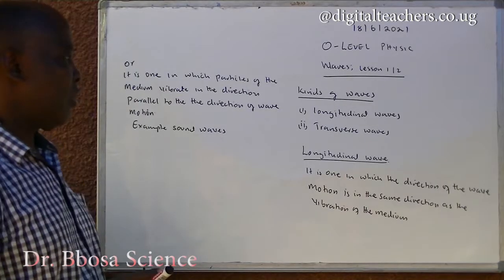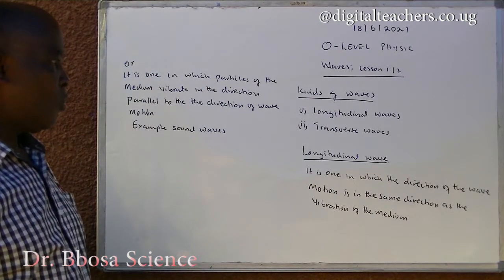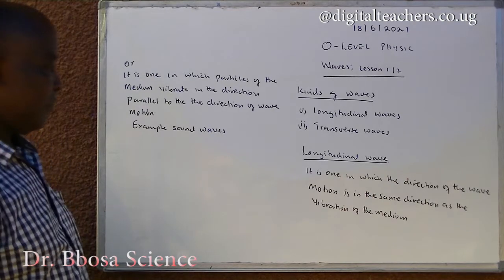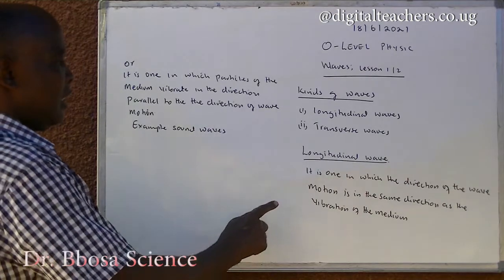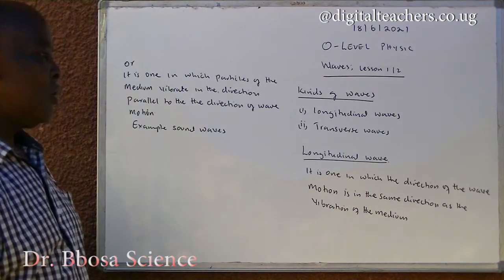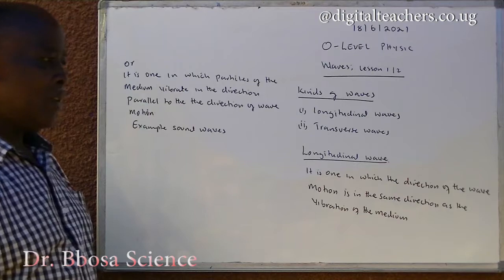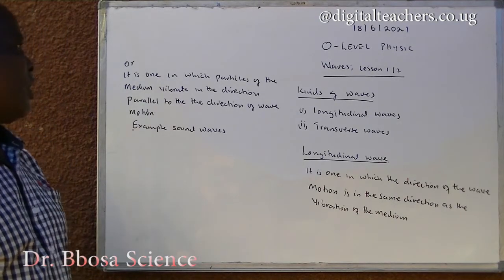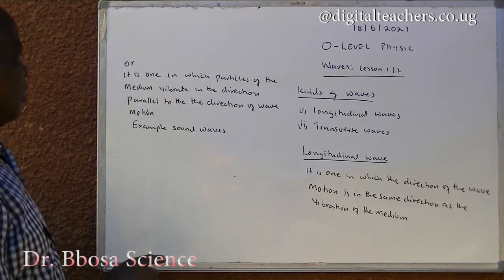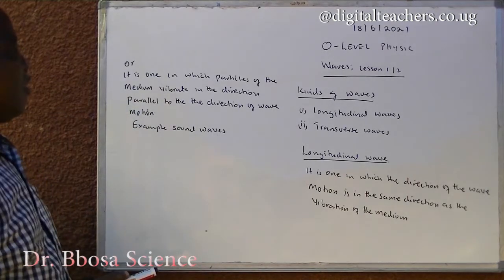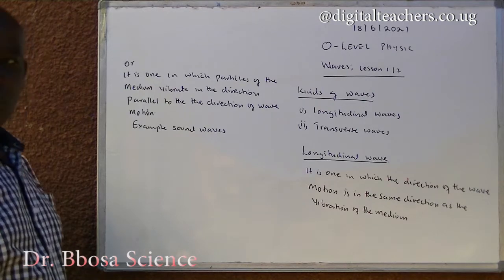Kinds of waves. One: we have longitudinal waves. Two: we have transverse waves. A longitudinal wave is one in which the direction of the wave motion is in the same direction as the vibration of the medium. Or it is one in which particles of the medium vibrate in the direction parallel to the direction of the wave motion.